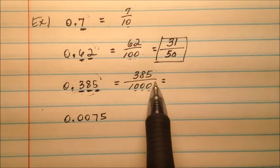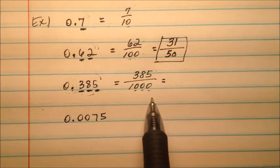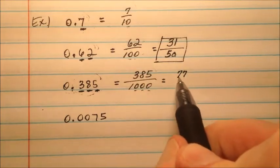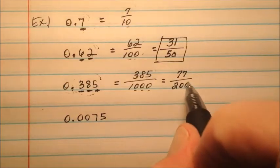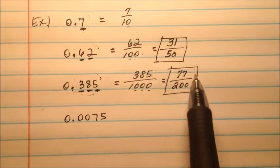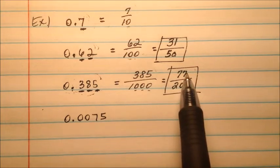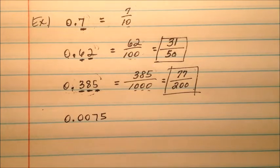I notice this can be simplified because both the top and bottom are divisible by five. So 385 divided by five should give you 77, and the thousand divided by five should give you 200. Again, you can always check to see if this simplified fraction is correct by checking the division. 77 divided by 200 and you will get 0.385.